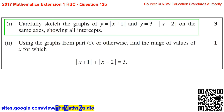Question 12b, Part 1. Carefully sketch the graphs of y equals the absolute value of x plus 1 and y equals 3 minus the absolute value of x minus 2 on the same axis, showing all intercepts.